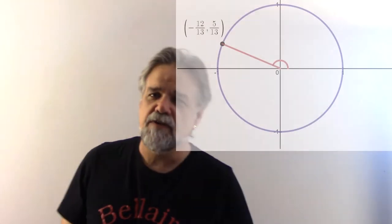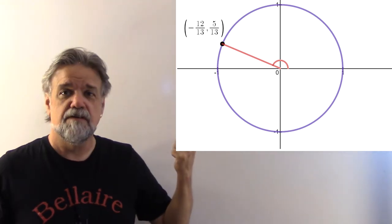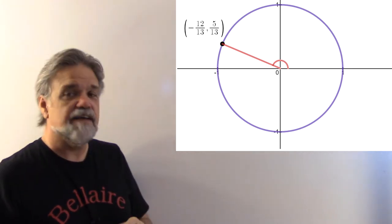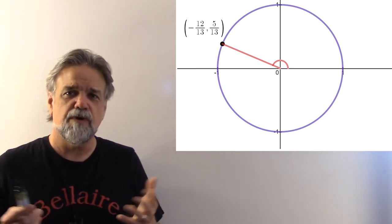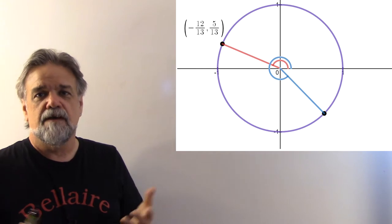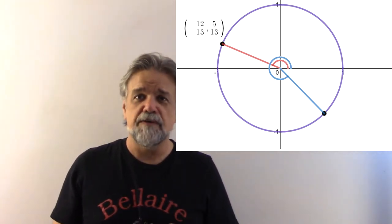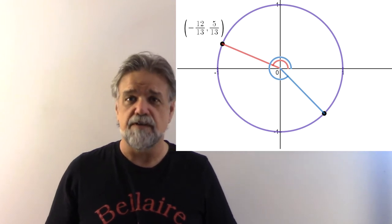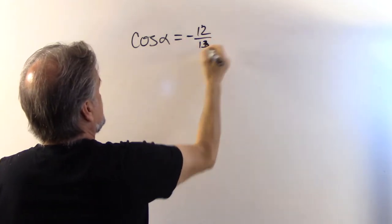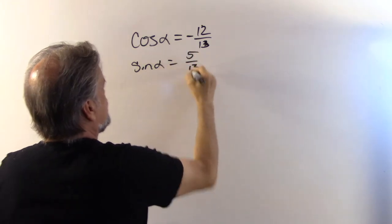Hey trig students, let's find three more identities we haven't talked about yet. Here's an angle on the unit circle — the cosine of this angle is negative 12/13 and the sine of the angle is 5/13. What I'm wondering is: what about two times that angle? What's the cosine of that? What's the sine of that? It's actually really easy. The cosine of alpha is negative 12/13, the sine of alpha is 5/13, and alpha is in quadrant two.